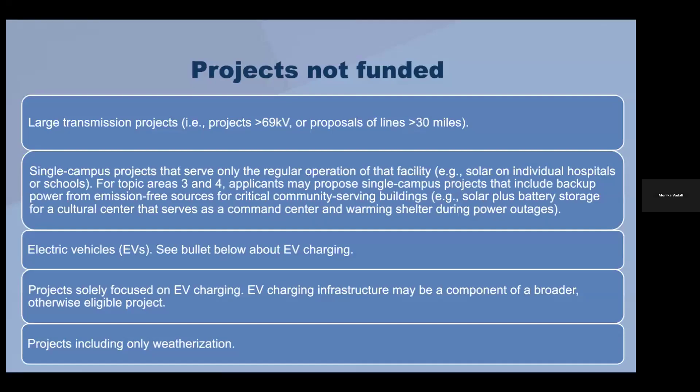It's important to know what projects will not be funded. Five categories are specified: large transmission projects; single campus projects where rooftop solar only benefits that specific building (though battery storage extending benefits to a larger community could be considered); EV charging stations for personal use (though larger EV charging infrastructure bundled with another project could qualify); and projects involving only weatherization of buildings or homes.